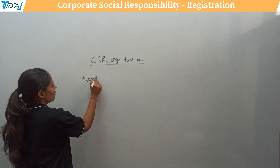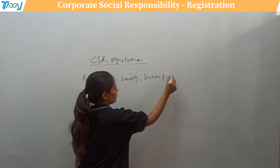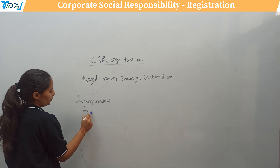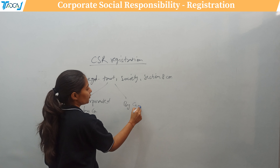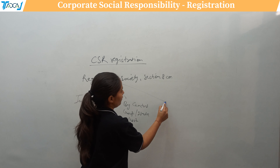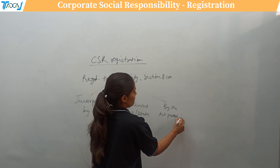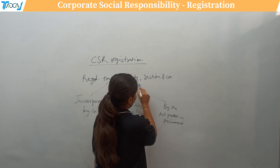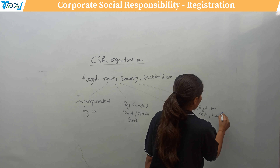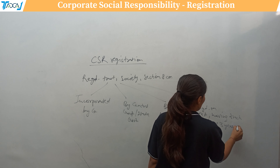CSR activities can be carried out through: a registered trust, society, or Section 8 company; a company incorporated by the central or state government; an entity established by an act passed in parliament; or an entity registered on MCA having a track record of three years or more.